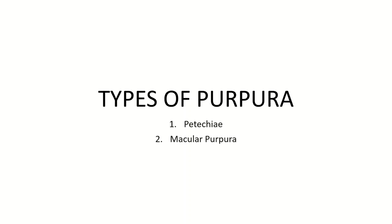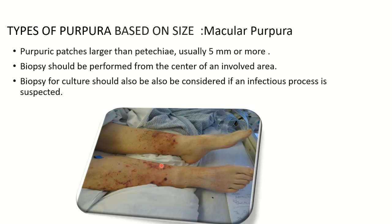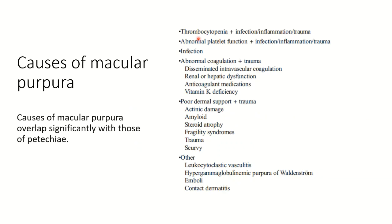The second type of purpura is macular purpura. These are purpuric patches which are larger than petechiae — usually 5 mm or more in size. Most of the time, one has to resort to a biopsy to come to a final diagnosis of this kind of purpura. The biopsy should be performed from the center of an involved area, and it is good practice to send culture along with the biopsy, because infection is one of the commonest causes of this kind of purpura.